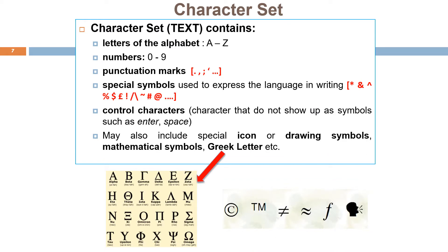Text elements can be as follows: letters of the alphabet, A to Z; numbers from 0 to 9; punctuation marks like full stop, comma, semicolon; special symbols like bracket, hashtag, percentage, normally used to express language in writing; control characters such as enter, space. Text may also include special icons or drawing symbols, math symbols, Greek letters, and so on.